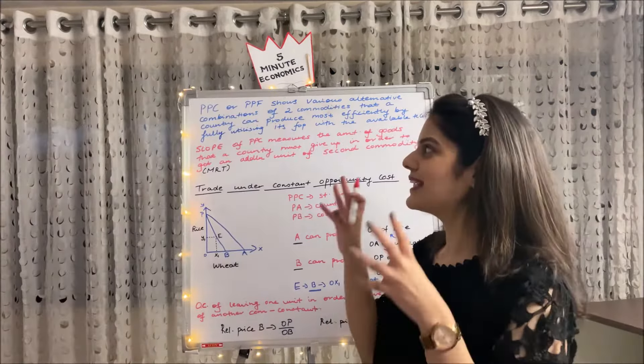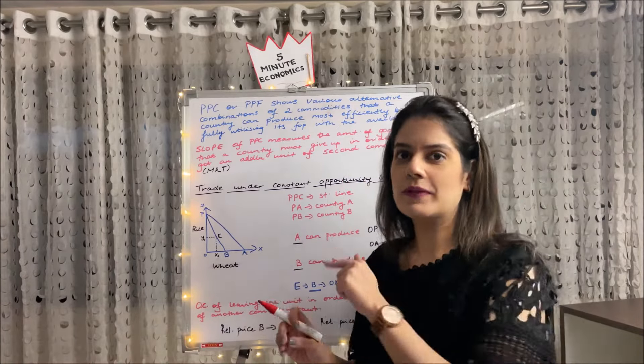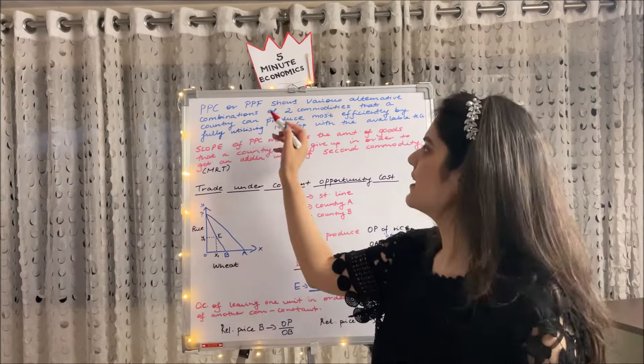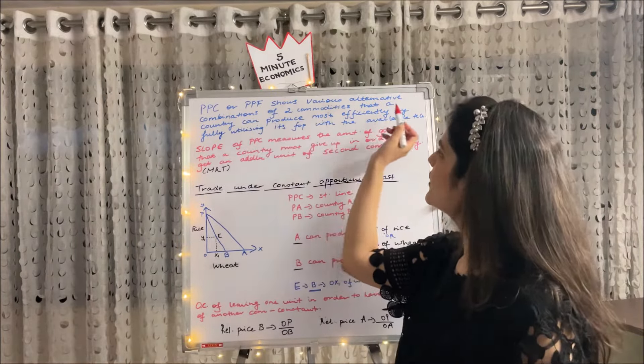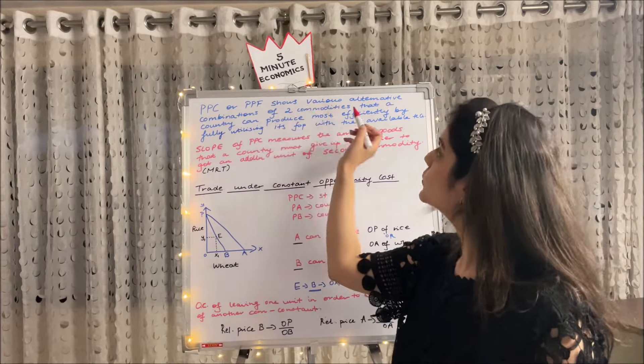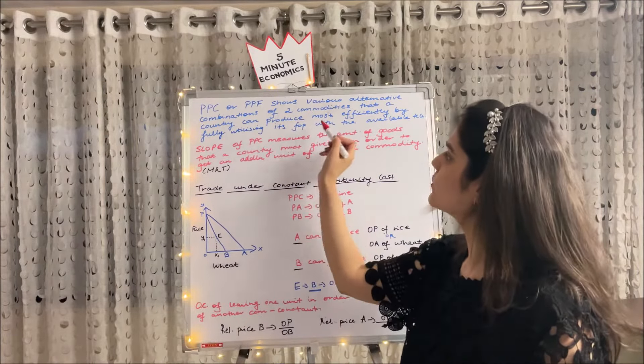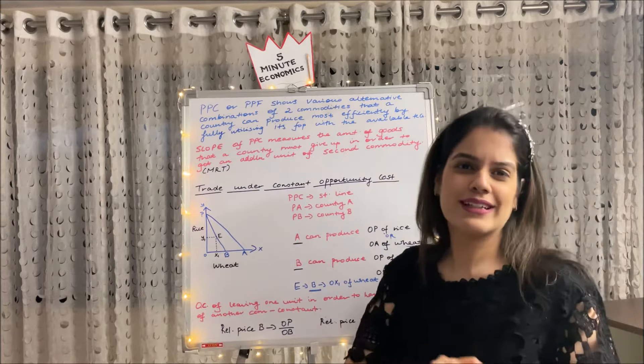So now, we'll be coming to the actual theories. PPC, Production Possibility Curve, or also known as PPF, Production Possibility Frontier, shows us the various alternative combinations of two commodities that a country can produce most efficiently by fully utilizing its FOP with the available technology.